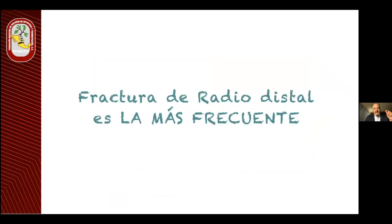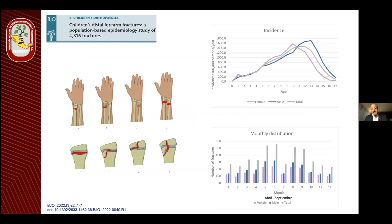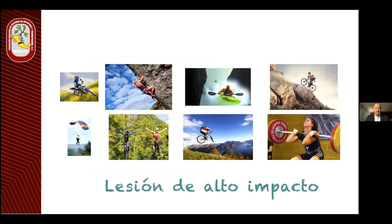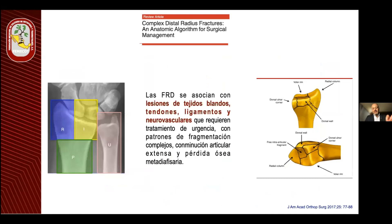La fractura de radio distal es la fractura más frecuente. En la infancia, lo más frecuente entre los 6 y los 14 años, más entre los meses de abril a septiembre. En el adulto en edad productiva, la lesión de alto impacto, con lesiones severas como las que nos muestran estas tomografías, donde nos preguntamos ¿por dónde inicio? ¿Qué pegamento voy a utilizar para tratar de acomodar la fragmentación? Sin olvidar siempre las partes blandas.